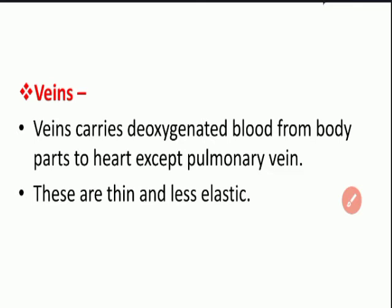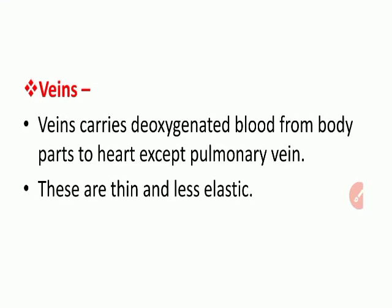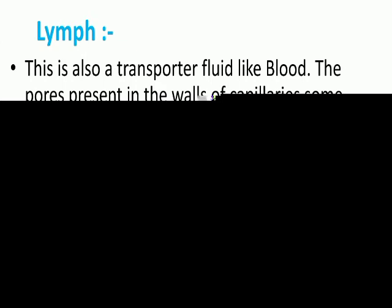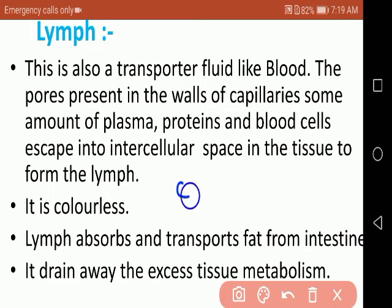Blood vessels: arteries carry oxygenated blood from the heart to body parts (except pulmonary artery). Arteries are thick and elastic. The smallest vessels, which are one cell thick, are called capillaries. Veins carry deoxygenated blood from body parts to the heart (except pulmonary veins) — veins are thin and less elastic. Lymph is also a transporter fluid like blood; it forms when plasma, proteins, and blood cells escape through pores in capillary walls into intercellular space.